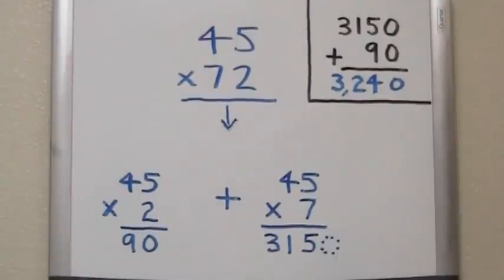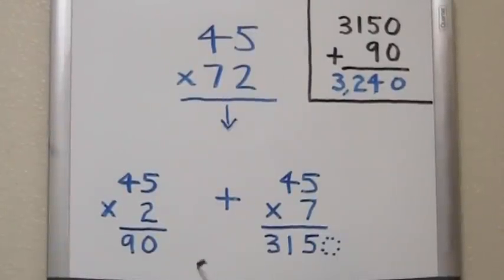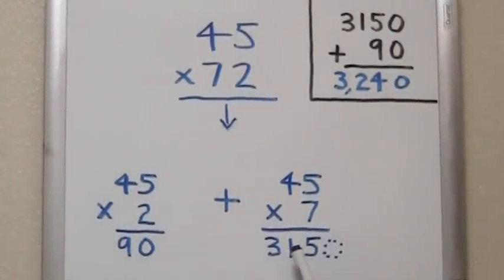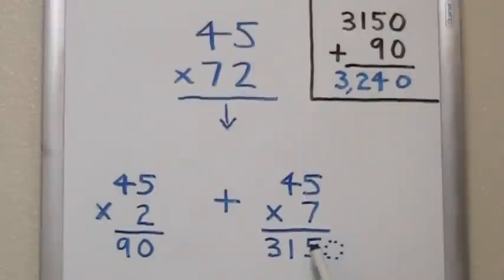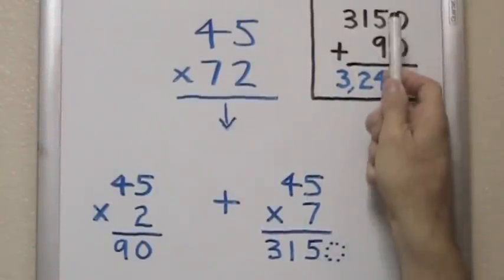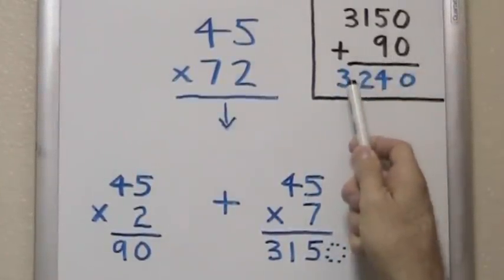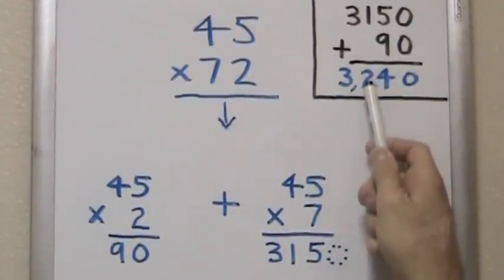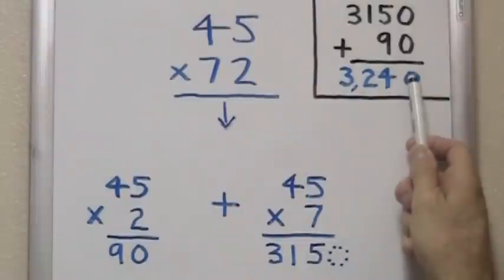Now all we do is take our two answers, 90 and 3,150, and add them together for a final answer of 3,240.